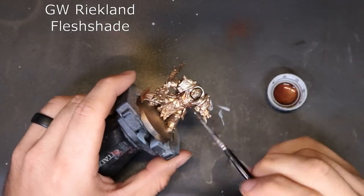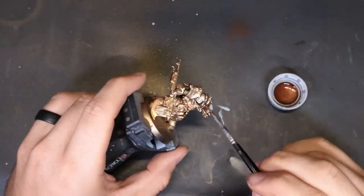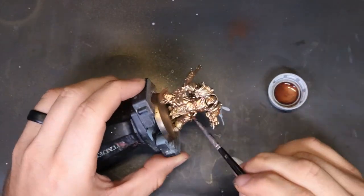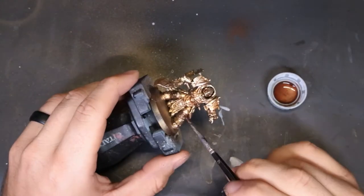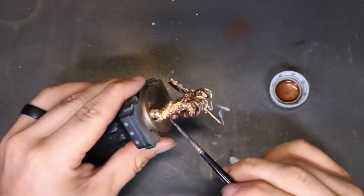So our next step in this model is to come through with our Reikland Fleshshade and start shading down these metallics, just to add a little definition in the recesses where these golds are all playing towards the top. Just add a little bit of differentiation to the surface.